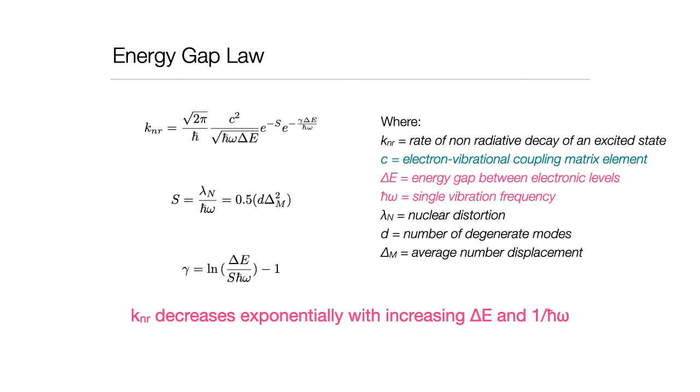Now, this is essentially giving me the factors which are going to matter most to how well a molecule can lose energy by non-radiative processes. And it's saying that the bigger the energy gap between the electronic energy levels, the slower the rate of non-radiative decay, and the bigger the vibrational gaps, the slower the rate of vibrational decay. But I've also highlighted one other term here, which is the coupling matrix elements.